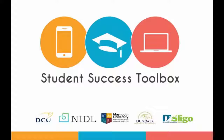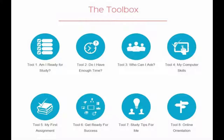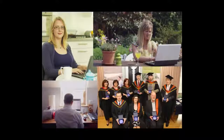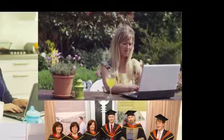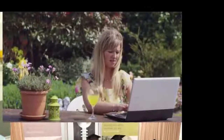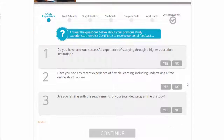The Student Success Toolbox Project has produced a suite of digital readiness tools in order to address the problem of effective transitions and the foundations for student success, with a specific focus on flexible learners entering higher education. By flexible learner we mean any adult learner engaged in part-time or off-campus online study. Enhancing retention and completion rates for this group of learners in order to facilitate successful widening of access is a significant global problem for higher education institutions.